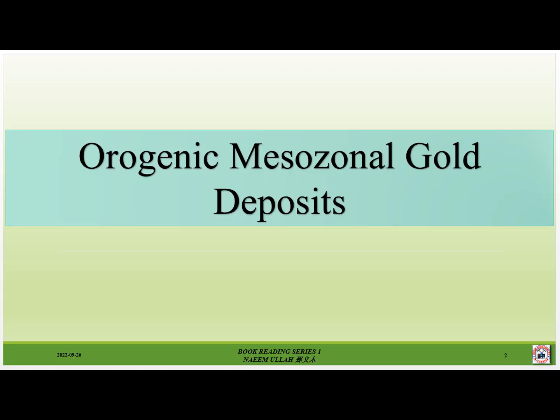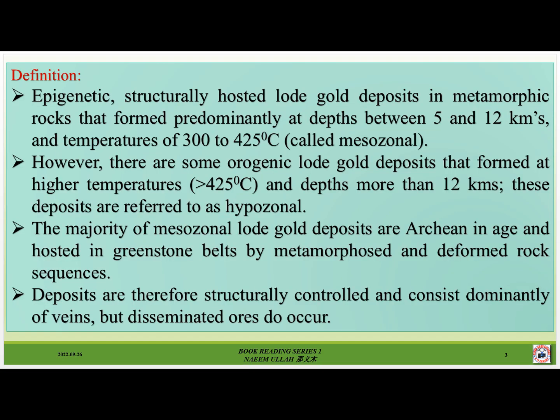Orogenic mesozonal gold deposits are defined as epigenetic, structurally hosted lode gold deposits in metamorphic rocks, found predominantly at depths between 5 and 12 kilometers and temperatures of 300 to 425 degrees centigrade. Some orogenic lode gold deposits are formed at higher temperatures greater than 425 degrees centigrade and depths more than 12 kilometers, and are referred to as hypozonal.